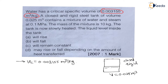Since there is water and steam, water is in the liquid state and steam is in the vapour state. This means the content is wet steam, having some dryness fraction X.